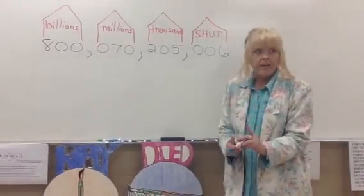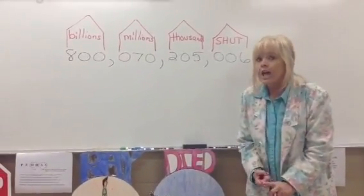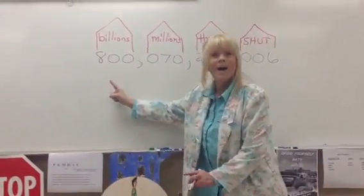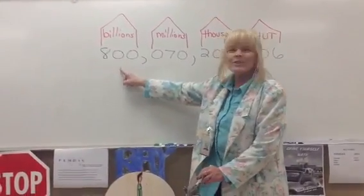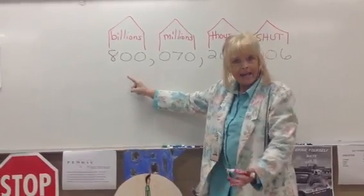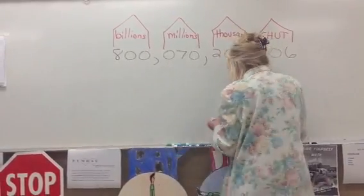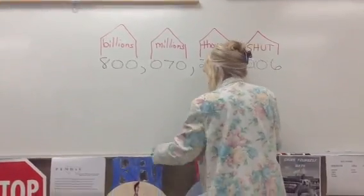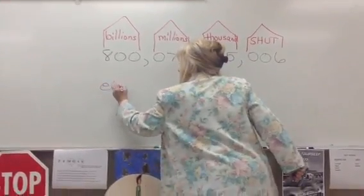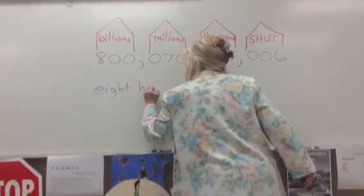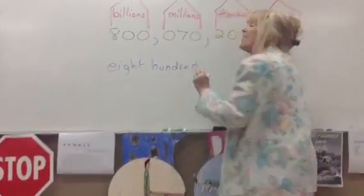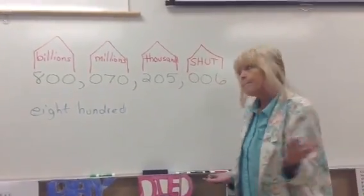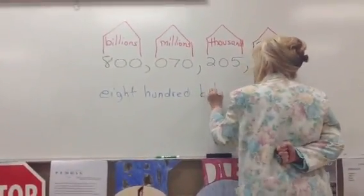The way you read that number is, first you say, who's in that house? Eight hundred. So you would write eight hundred. Then you say the name of the house — billion. Eight hundred billion.